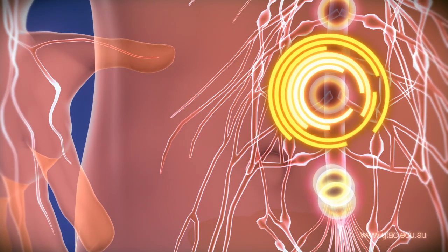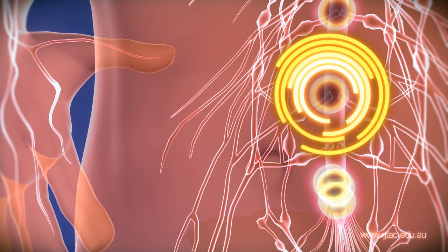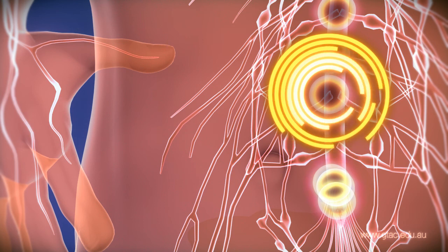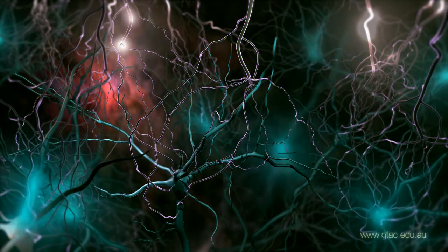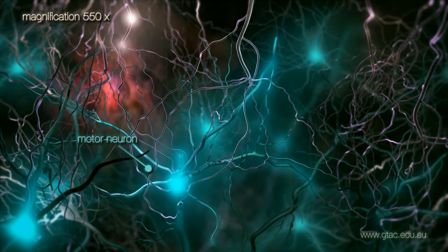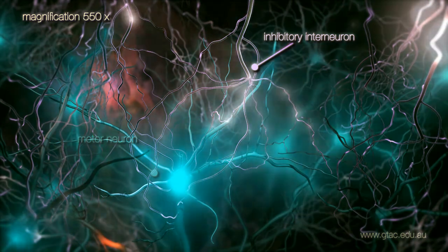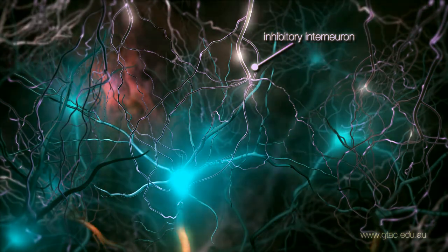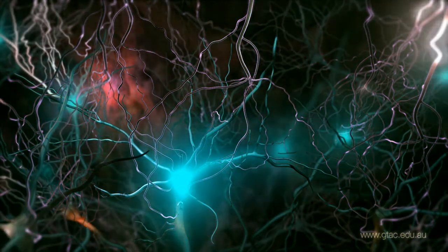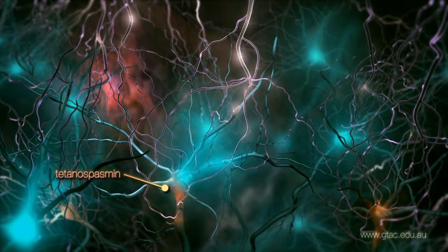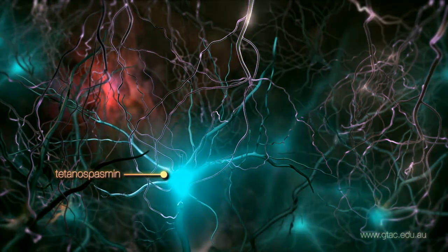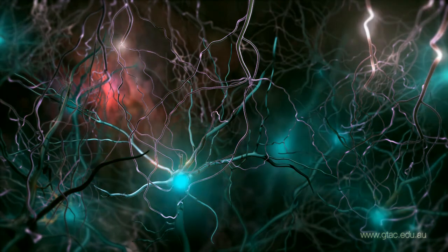We will now zoom into the spinal cord tissue. In the spinal cord, the motor neurons are controlled by inhibitory interneurons. These interneurons prevent the motor neurons from constantly firing. Tetanospasmin toxins arriving in the motor neuron cell body interfere with the action of the inhibitory interneurons.